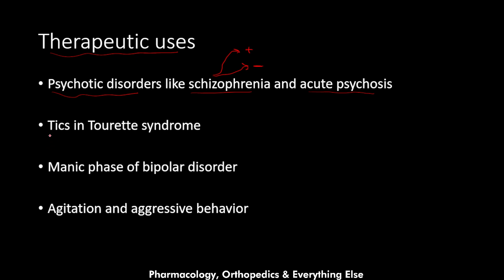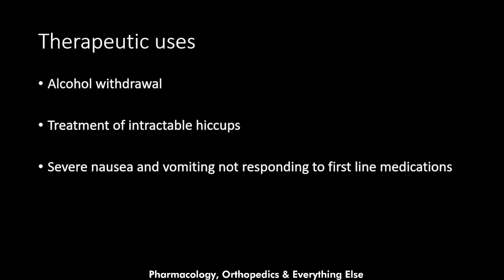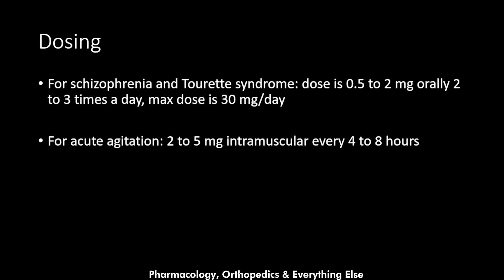Haloperidol is also used in the treatment of Tourette's syndrome and the manic phase of bipolar disorder. It is effective in the treatment of agitation and aggressive behaviors because it has a calming effect on the patient. It is also used in the treatment of alcohol withdrawal symptoms such as hallucinations, intractable hiccups, and severe nausea and vomiting not responding to first-line medications, because haloperidol inhibits the vomiting center.